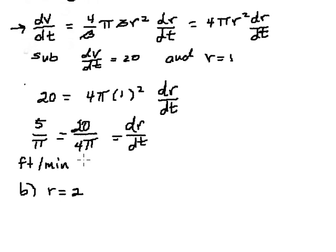So we're going to substitute in r equal 2 this time. And we have substituting still 20 for dV/dt is equal to 4π(2)² dr/dt. This is 4.